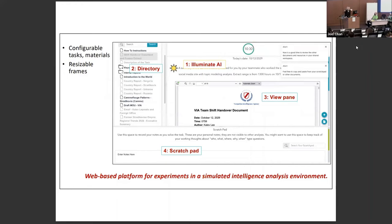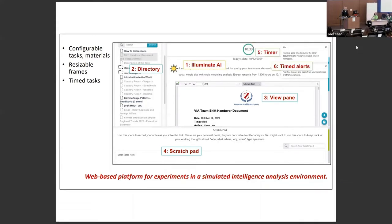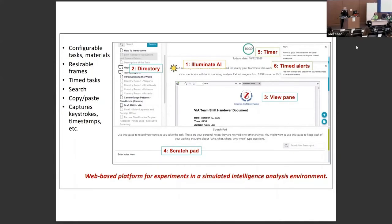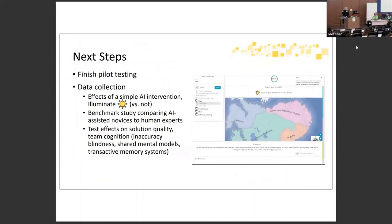The directory on the left lists all available documents, which are generally available at the start but continue to be provided during the experiment. The view pane is where participants see their information. Participants also have a scratch pad at the bottom to write down notes — it's a 45-minute task with a timer and timed alerts throughout. The platform includes search and copy-paste ability, and we capture keystrokes and timestamps. It's also interoperable with both Qualtrics and Mechanical Turk.